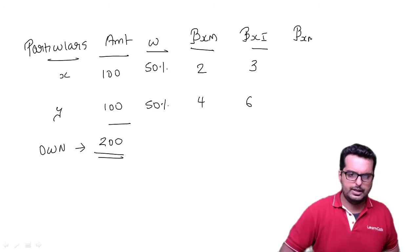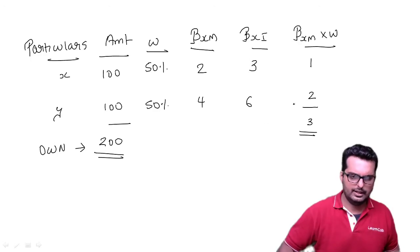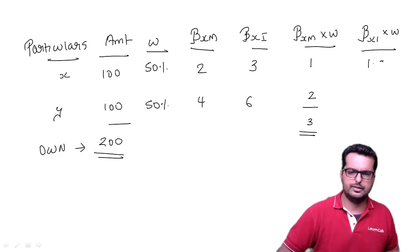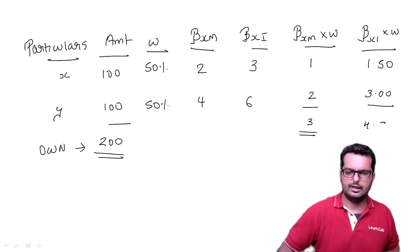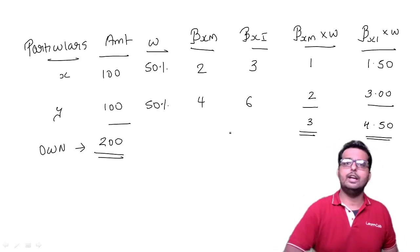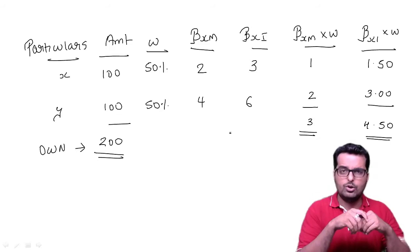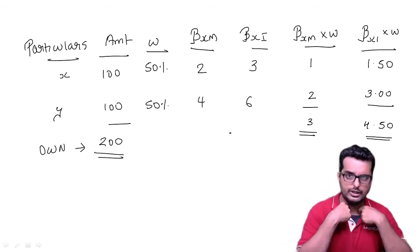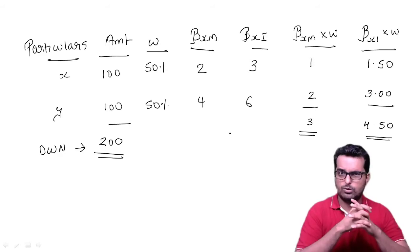We need to find the overall beta. I can do it separately for beta XM and separately for beta XI. Beta XM into weight: 2 into 50% is 1, and 4 into 50% is 2, giving an answer of 3. Beta XI into weight: 3 into 50% is 1.5, and 6 into 50% is 3, giving an answer of 4.5. I found the overall beta using two methodologies.